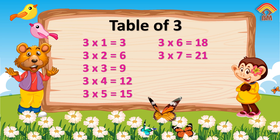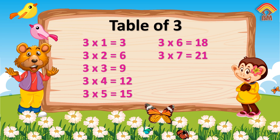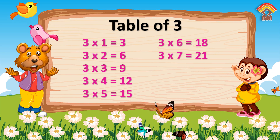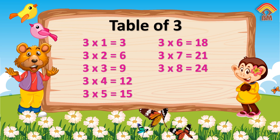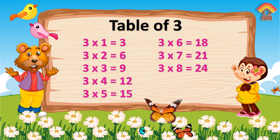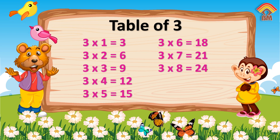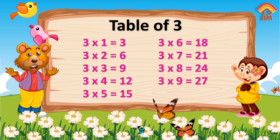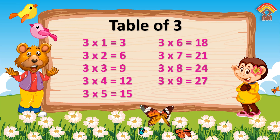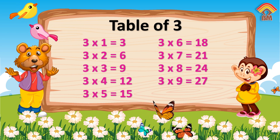Three, seven's a twenty-one. Three, eight's a twenty-four. Three, nine's a twenty-seven.